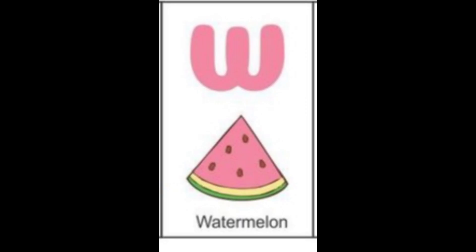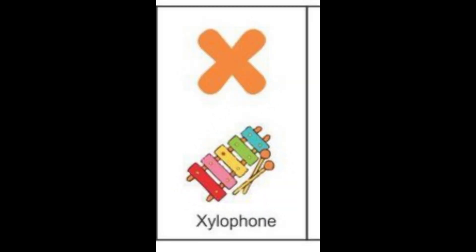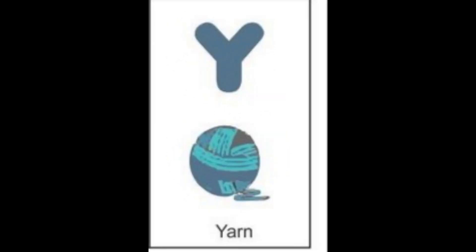The next letter is W. W for watermelon. The color of watermelon is red. The next letter is X. X for xylophone. The color of xylophone is orange.